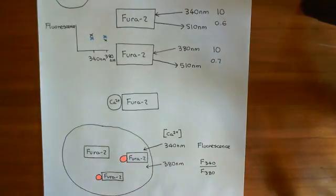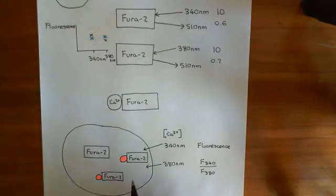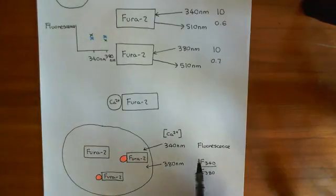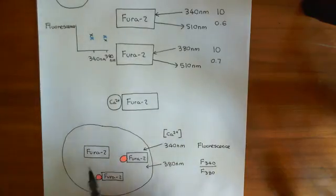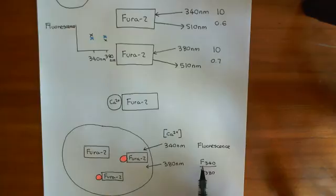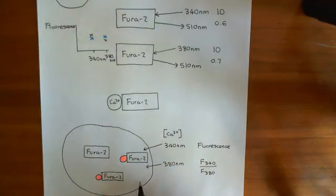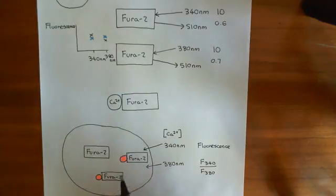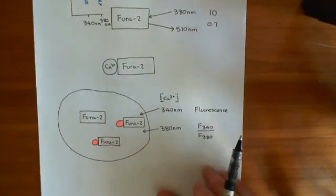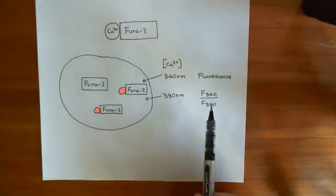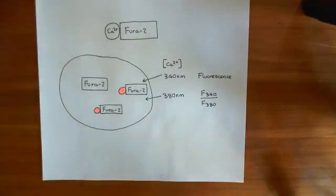This ratio tells you information about the calcium concentration within the cytoplasm. It depends on what fraction of the Fura-2s are bound to calcium rather than the absolute number. That's very nice because your absolute fluorescence will depend on how many Fura-2 molecules you have and how thick your cell is and things like that, whereas the ratio between them won't depend on those factors. So it's a very nice measure for identifying calcium levels within cells.